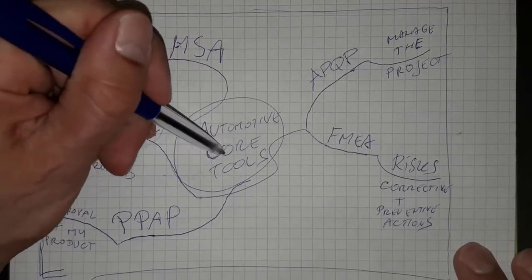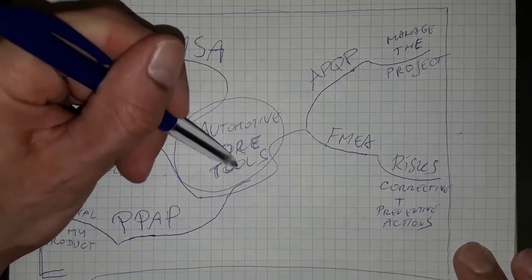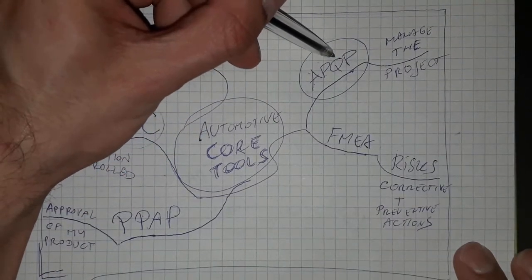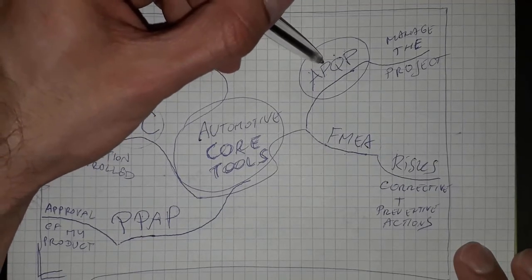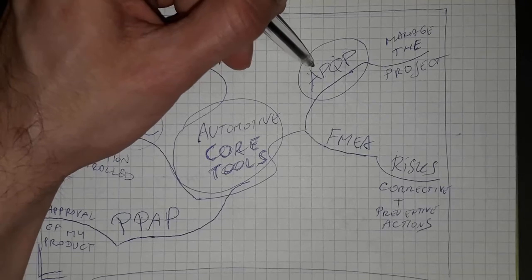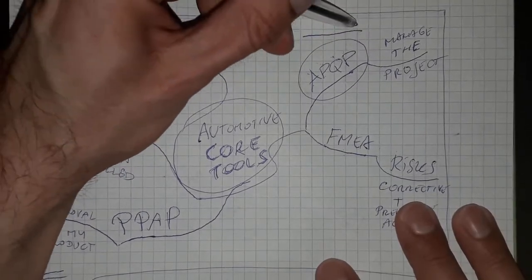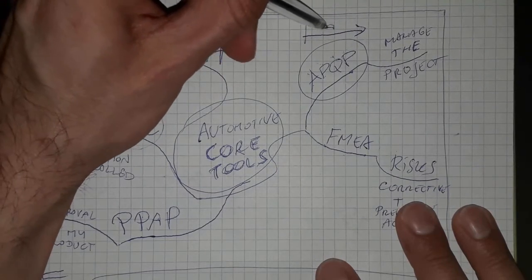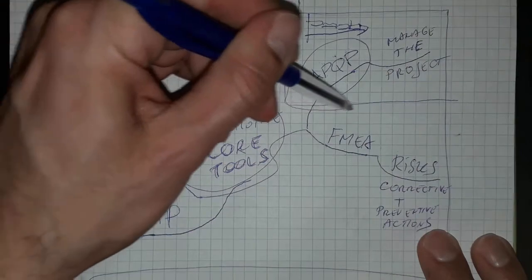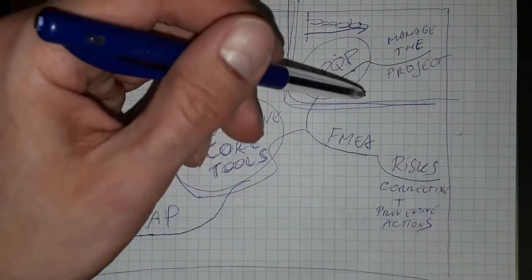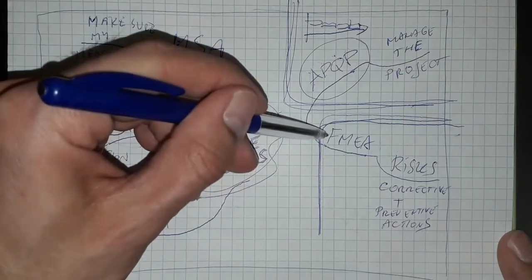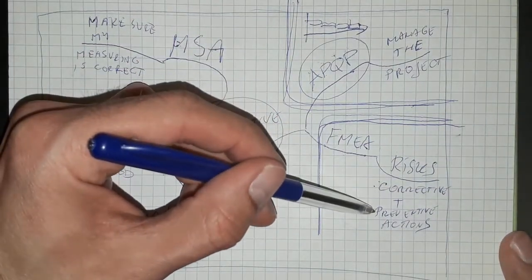So these are the five core tools. First, I need to manage my whole project from beginning to end — this is APQP, Advanced Product Quality Planning. There is a timeline with many phases which we will talk about later. Then within the project I have a phase where I need to consider all the risks — this is FMEA, Failure Mode and Effects Analysis, where I consider the risks and how to prevent and correct them.